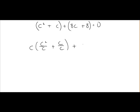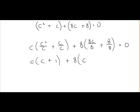8c plus 8, the common factor here is obviously 8. So we divide 8 into 8c and 8 here also. Next we complete our division so we have c by c squared divided by c is just c. c divided by c is 1 plus 8 by 8c divided by 8 is c, 8 divided by 8 is 1.